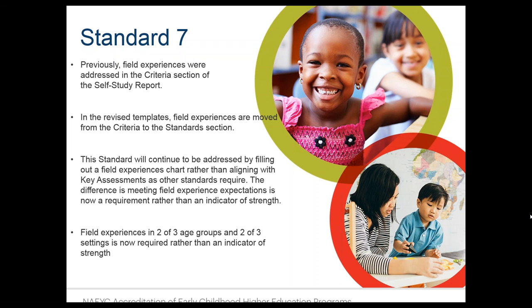To confirm: based on how standard seven works, we will not be using a key element from standard seven on a rubric. That is correct. For key assessments, programs are only using standards one through six. After the key assessment section in the template, you'll find a separate standard seven section with indicators of strength — which will look very familiar from criterion five in the previous template — along with the revised field experience chart.